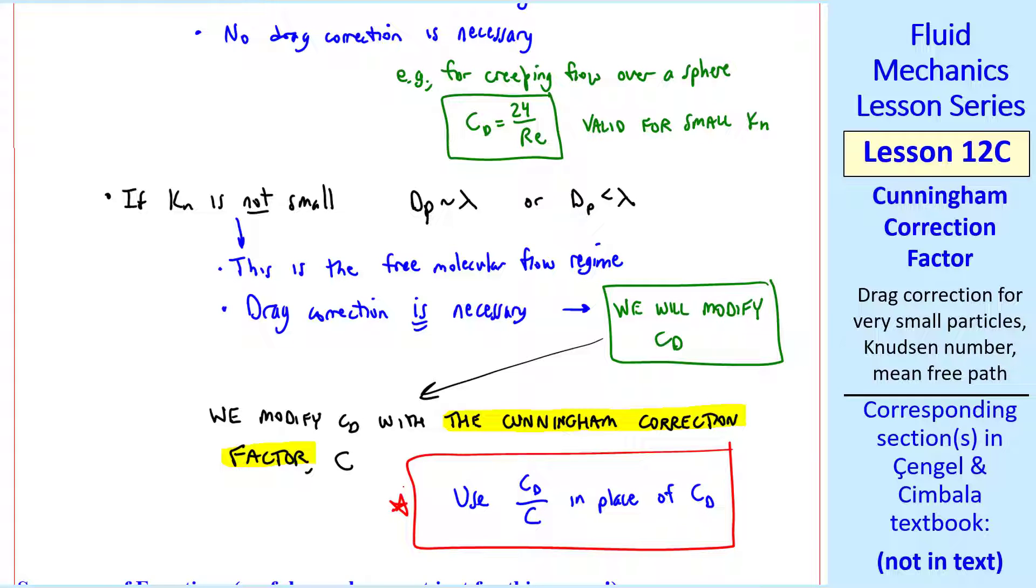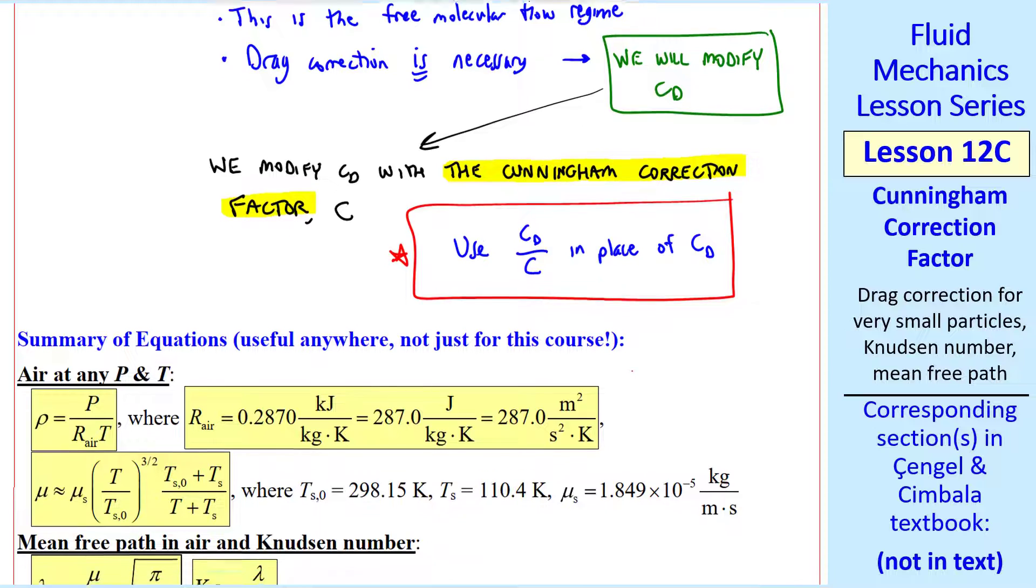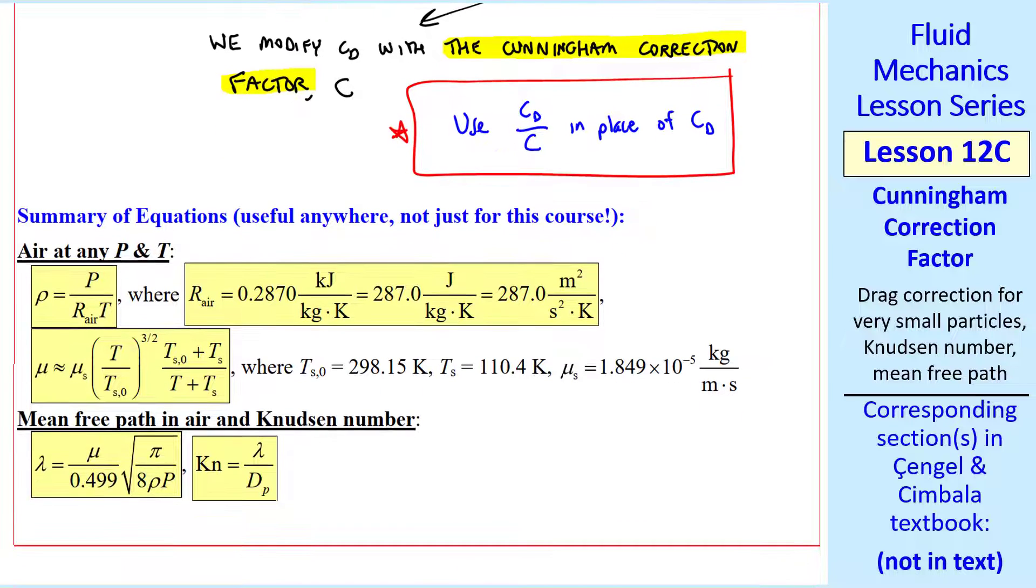I'll define this Cunningham Correction Factor in a minute. First, I want to show the summary of equations for air at any pressure and temperature. We have the ideal gas equation, with a specific gas constant for air in any of these three groupings of units.